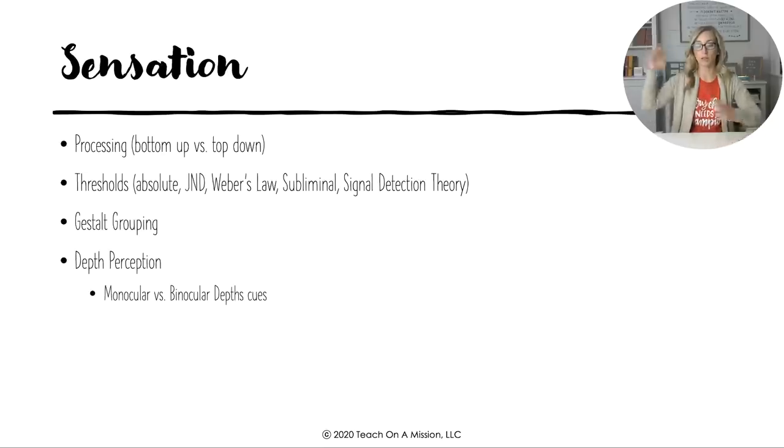Likewise, if it's large, like a really loud stimulus or a really heavy stimulus, then we need more of a change in order to detect that difference. Of course, there's the subliminal threshold or subliminal messages, and it's underneath our absolute threshold, but does it really still impact us? It's kind of up in the air, but no, not really. And then there's signal detection theory, which simply says that we don't have absolute thresholds, that our thresholds depend on things like our motivation, our expectations, our level of fatigue, and background stimulus.